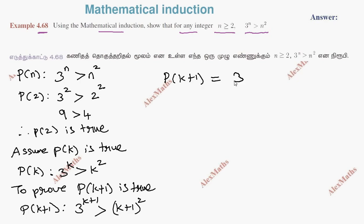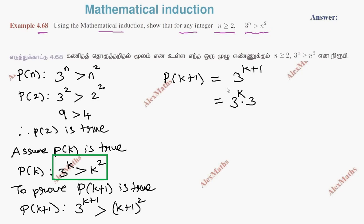Consider 3 to the power k plus 1. If we split it up, 3 power k plus 1 equals 3 times 3 power k. Since we already know 3 power k is greater than k squared, we get 3 times 3 power k is greater than 3 times k squared.